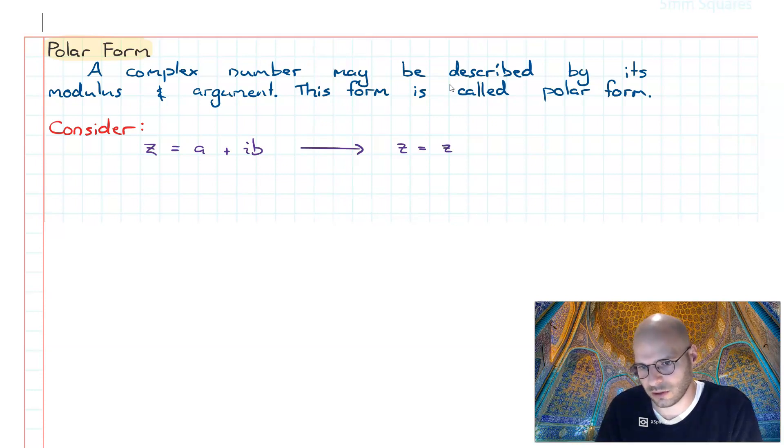We have two components still. The polar form is shown as such: we still have the real component shown here and the imaginary component here, but we're representing it using cosine and sine and using the modulus and the argument.